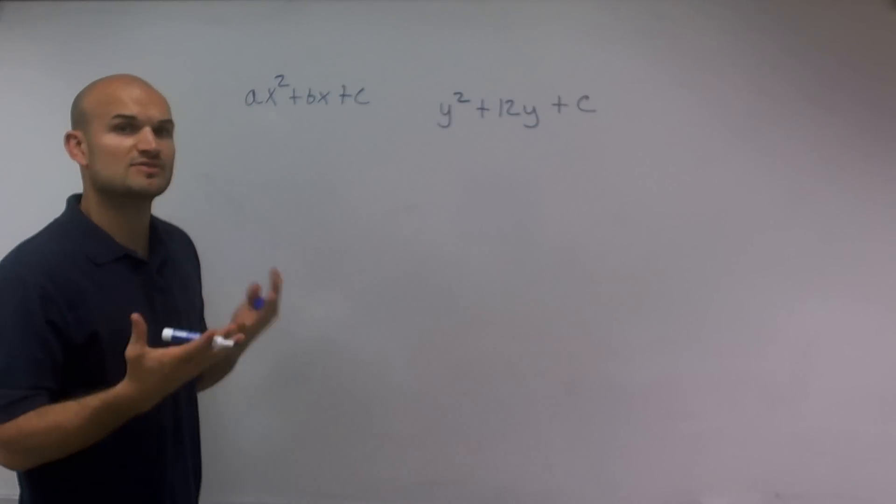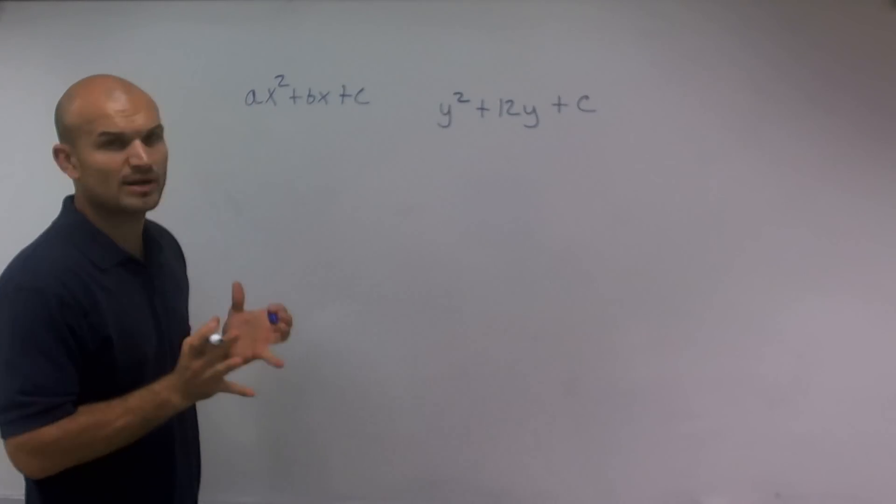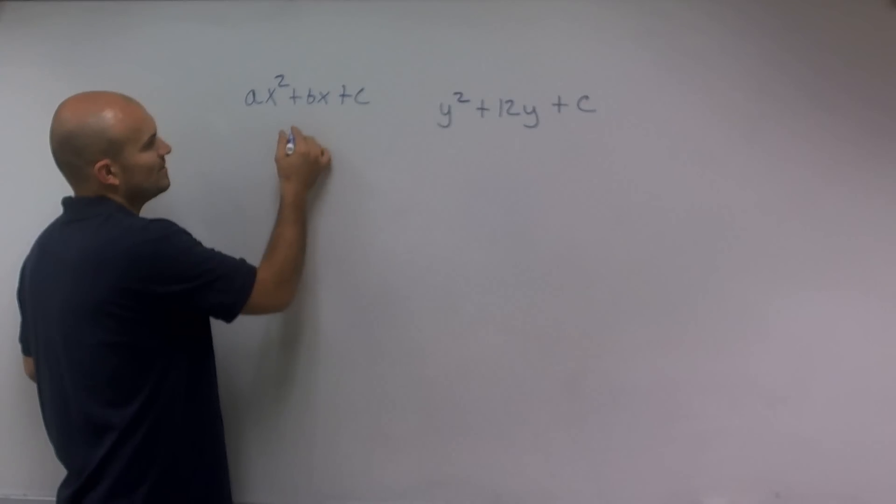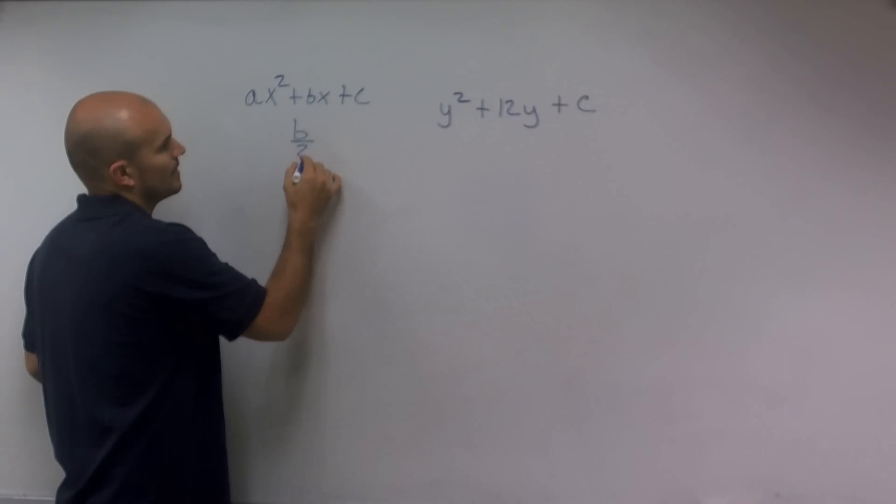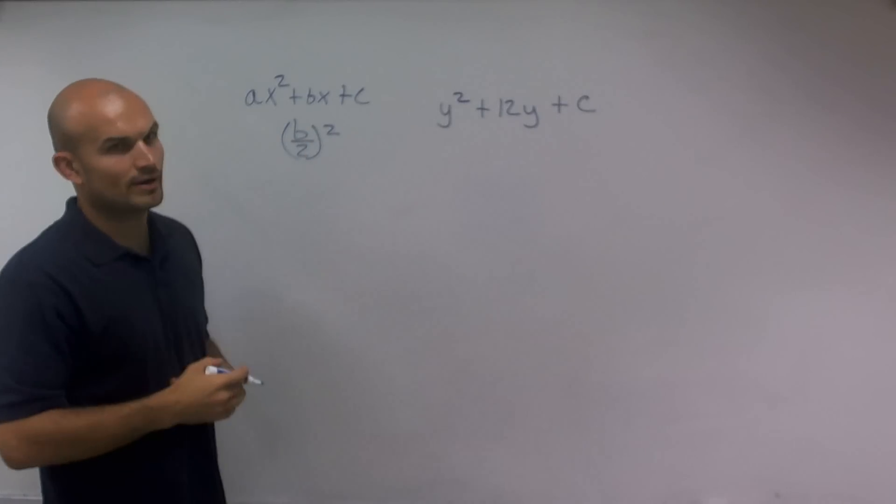Now, completing the square just pretty much follows a pretty basic system. We're going to take our b and divide it by 2 and then square it.